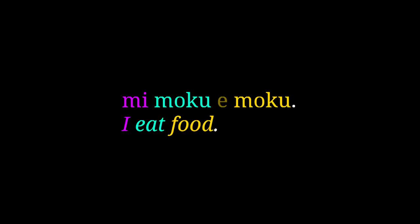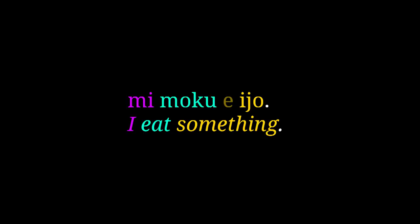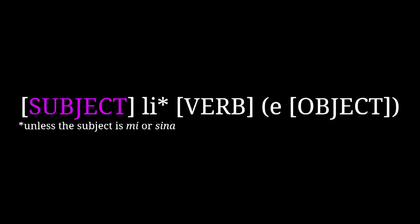You could also use 'ijo,' a very general noun which means 'thing' or 'object,' to say 'mi moku e ijo' for 'I eat something.' Now that we have these two particles, li and e, we can create a very basic outline for a typical Toki Pona sentence: first you have the subject of the sentence, then the particle li, then the verb, then the particle e, then the object. It's really important to understand this structure, because pretty much any Toki Pona sentence can be read and understood using this formula, even as we add more grammatical features later down the line. This is the heart of Toki Pona grammar.